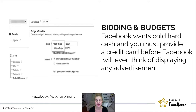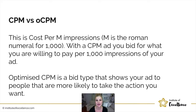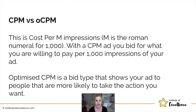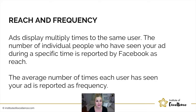Bidding and budget: Facebook wants cold, hard cash and you must provide a credit card before Facebook will display any advertisement for you — so set up your billing account before your ad campaigns. CPM means cost per thousand impressions — 'M' being the Roman numeral for 1,000. With a CPM ad you bid for what you're willing to pay per 1,000 impressions. An optimized CPM is a bid type that shows your ad to people more likely to take the action you want them to take.